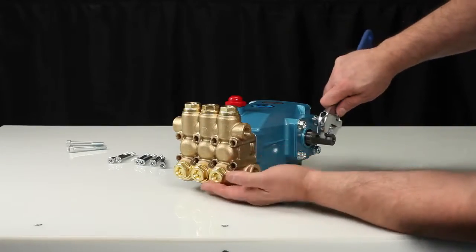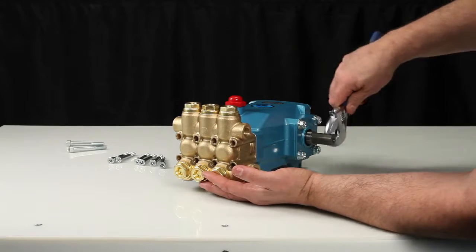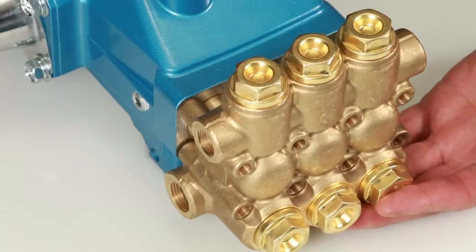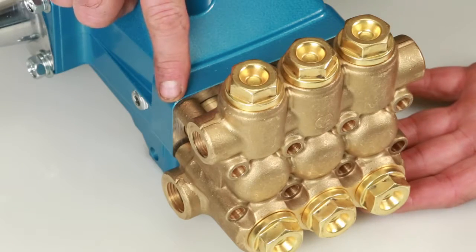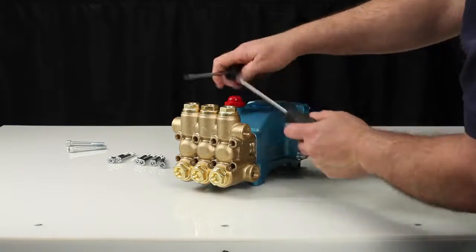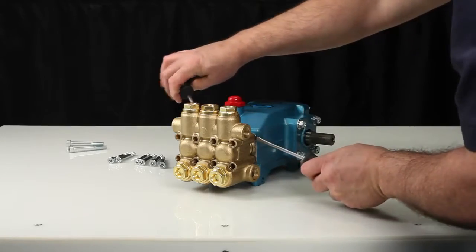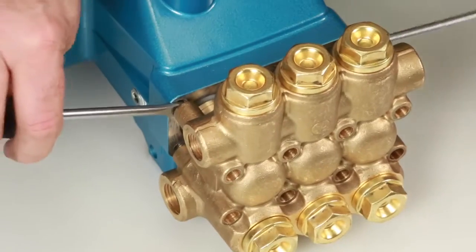To create separation between the manifold and crankcase, rotate the crankshaft until there is a gap between the manifold and crankcase. Once separation has been made, use two flat-tipped screwdrivers to pry manifold away from the crankcase.